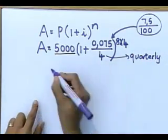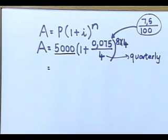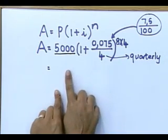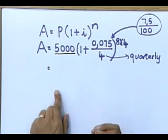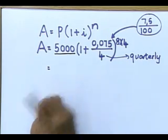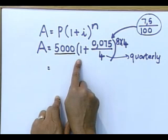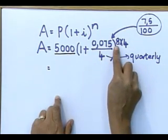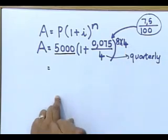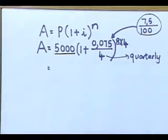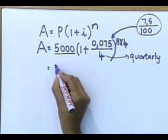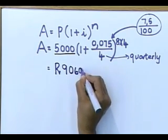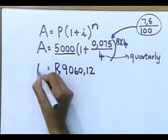Everybody on your calculators — SMS your answers through to me. I am going to give you a minute to punch this in. I am not writing the answer down yet. All you do is: 5,000, open your bracket, one plus 0.075 divided by four, close bracket, to the power of eight times four. If you do this correctly on your calculator, your final answer is going to be 9,060 rand and 12 cents in your account.